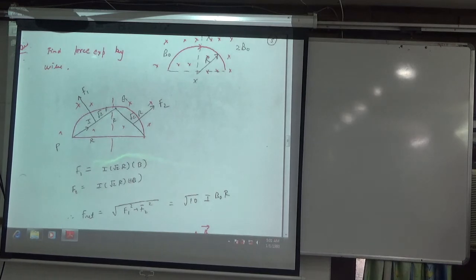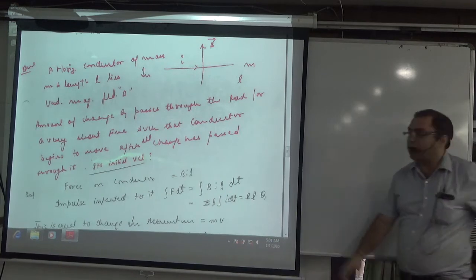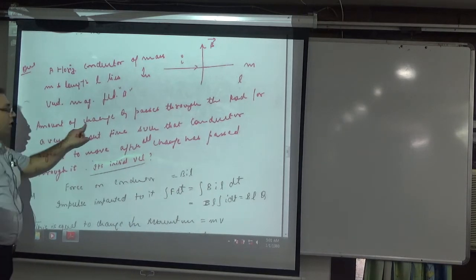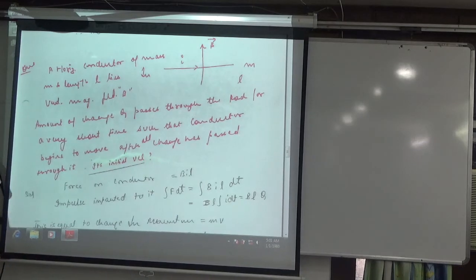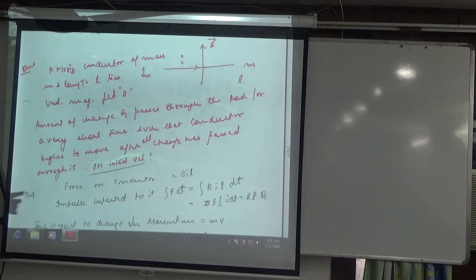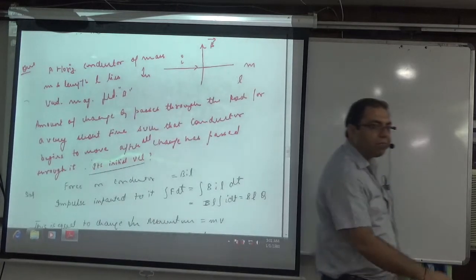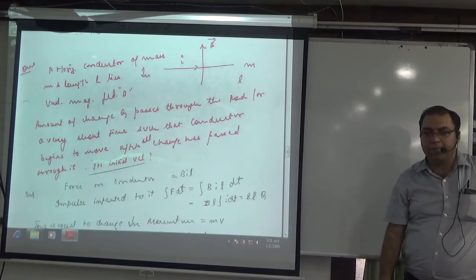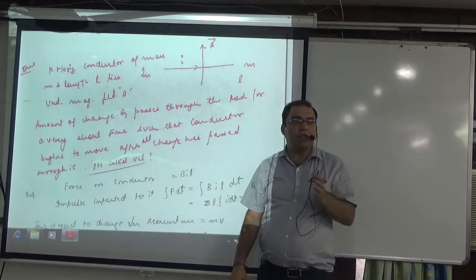There is a rod of mass M, length L, in a magnetic field. A charge Q passes through the rod. So the rod carries current for a very short instant — for a small time dt there was a force B, I, L. This is an impulse application. Force into time is impulse. For small time dt, the impulse is F·dt. Integrating for total impulse: B and L come out, and the integral of I·dt equals Q, because current is dq/dt, so dq = I·dt. Integrating gives total charge Q. So total impulse equals BQL.